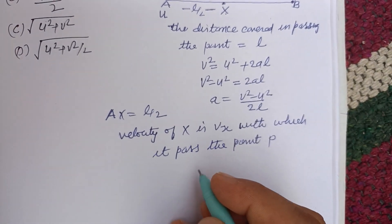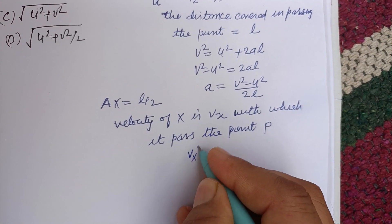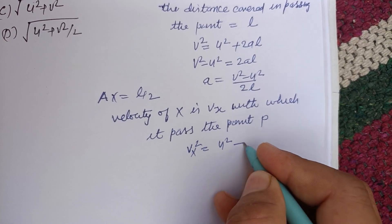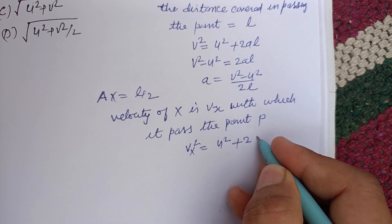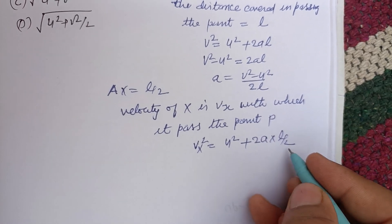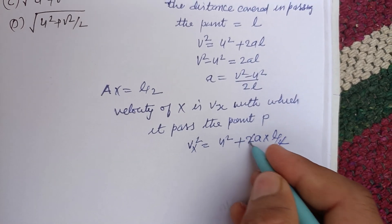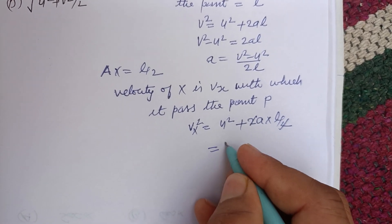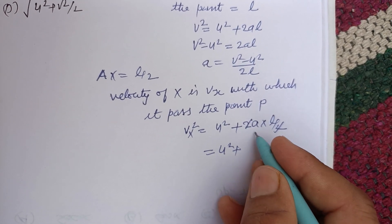So using Vₓ² = u² + 2a·(L/2), as s is L/2 here, so we divide 2 by 2. This is u² plus a is (v² - u²) / 2L.